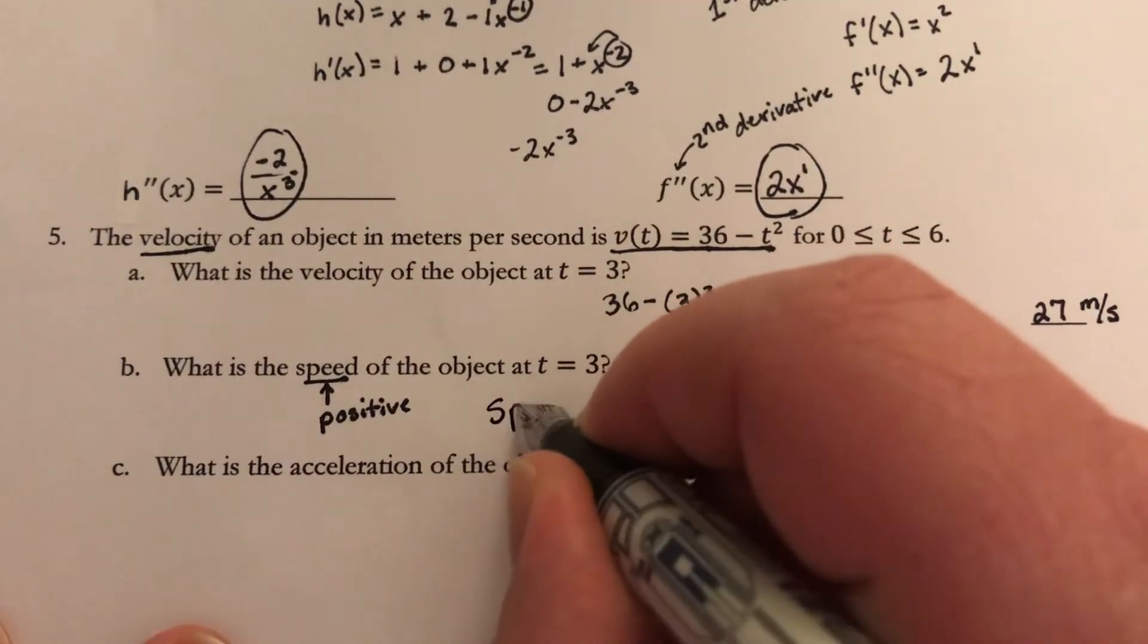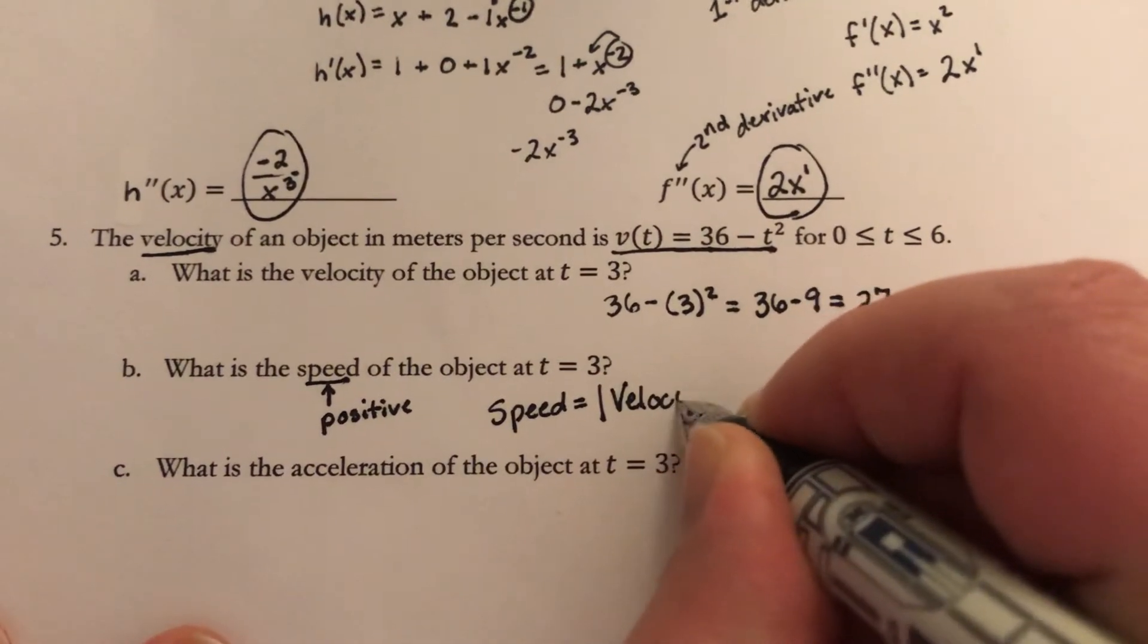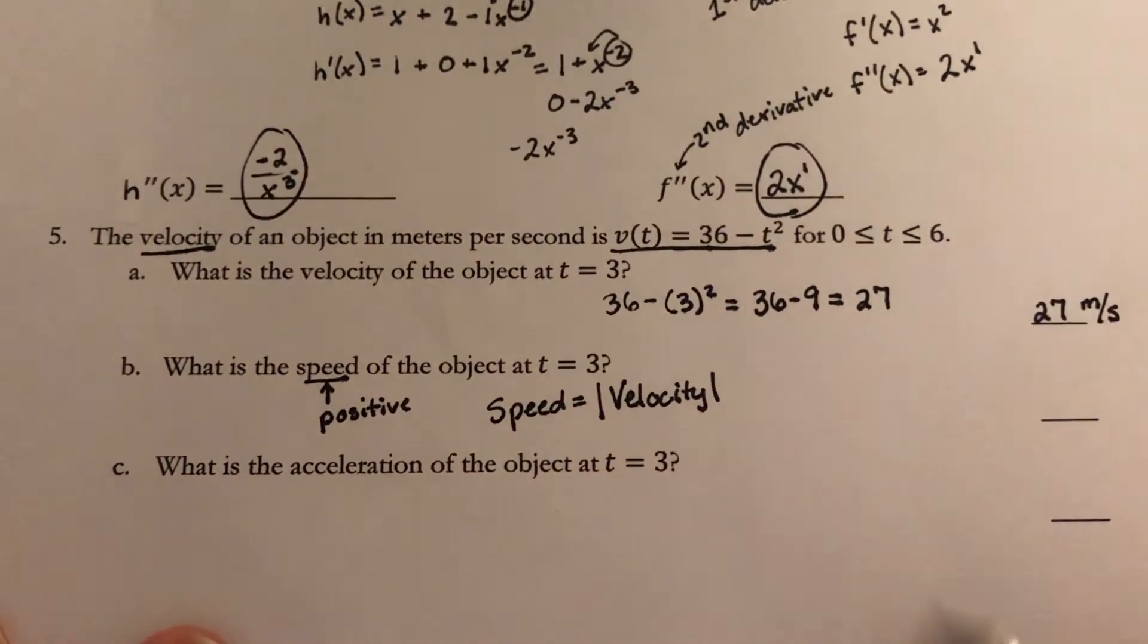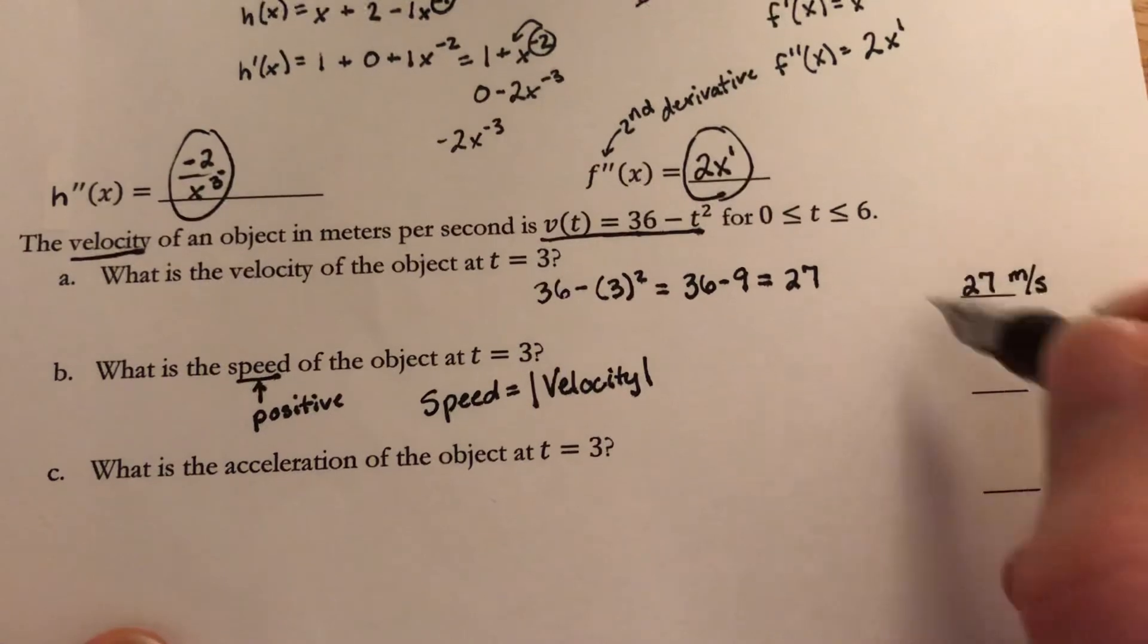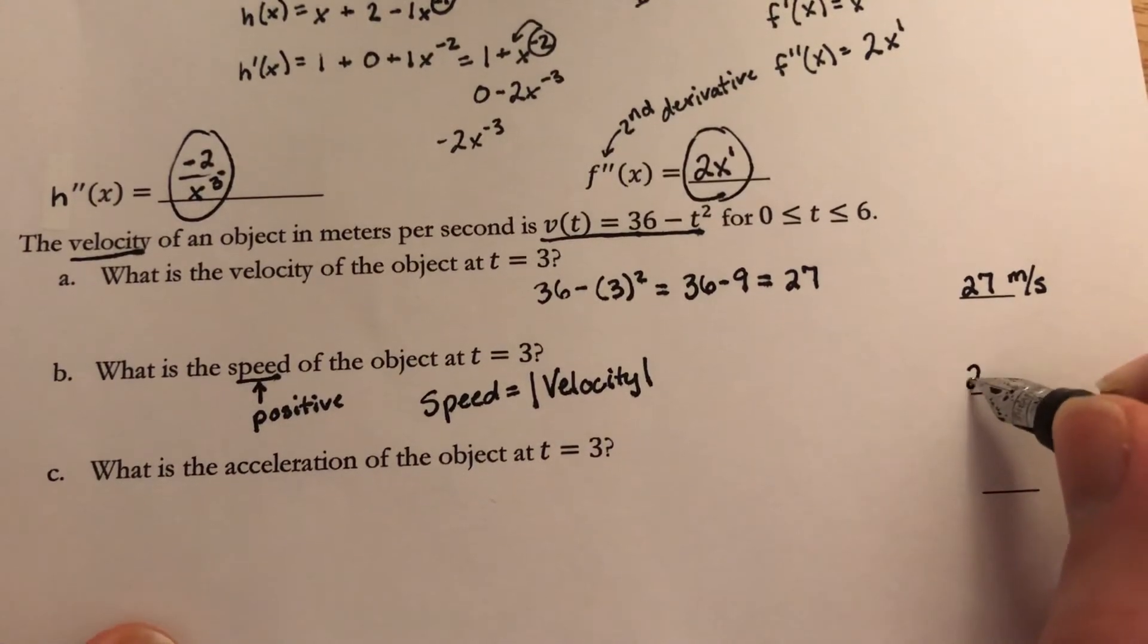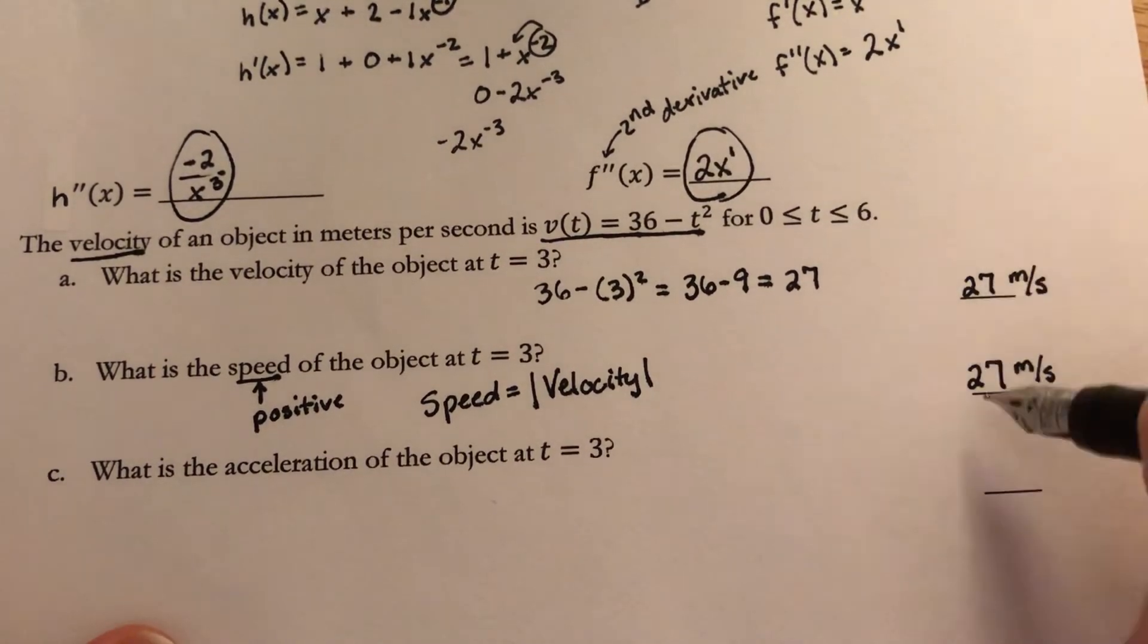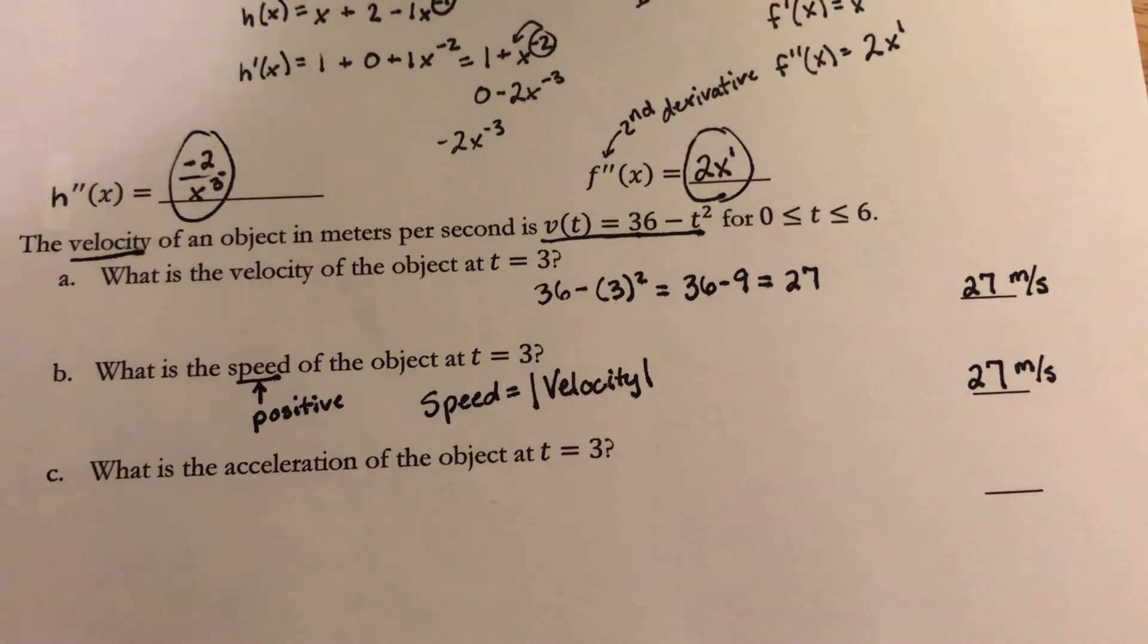I'll write it down. Speed equals the absolute value of the velocity. In this case, I still have a positive velocity at 27 meters per second, so that means its speed is still going to be the same answer. Had I gotten a negative here, I'd just make it positive, and that would be the correct speed.